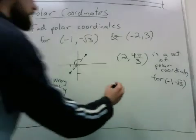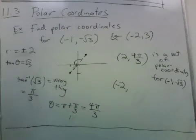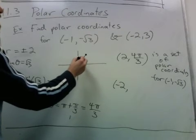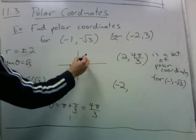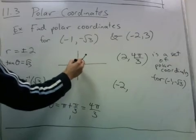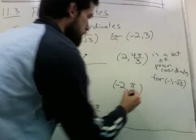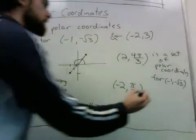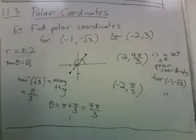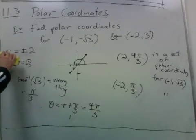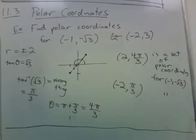But if we want to look at a negative r value, we would go to this angle because if we were at π/3, we would go backwards by 2. So π/3 would give us the right thing. So this is also a set of polar coordinates for that point: (-2, π/3). And again, we could add any multiple of 2π to this if we want.